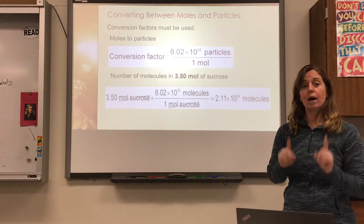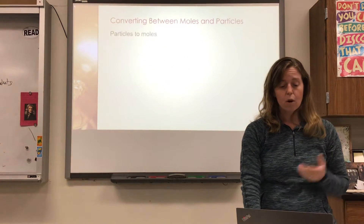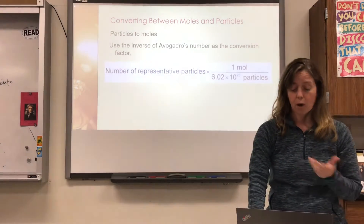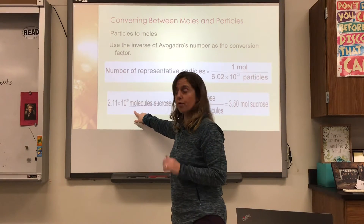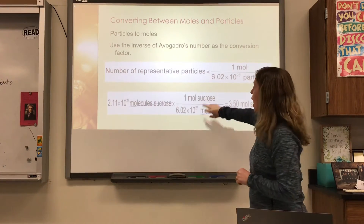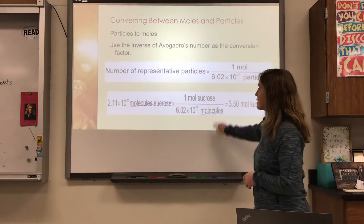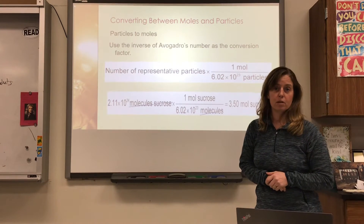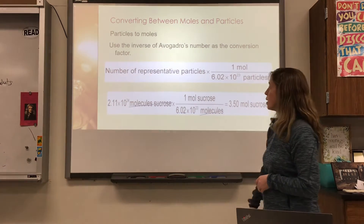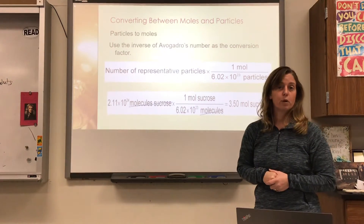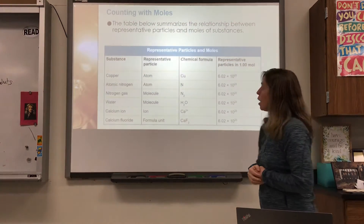What if you were given particles and trying to go to moles? If I had 2.11 times 10 to the 24th molecules of sucrose, I would flip my conversion factor. Instead of multiplying by the constant, I use 1 over 6.02 times 10 to the 23rd. Using the carrot key, put that number in parentheses. Multiply by 1 and divide by 6.02 times 10 to the 23rd, and I should get 3.5 moles.